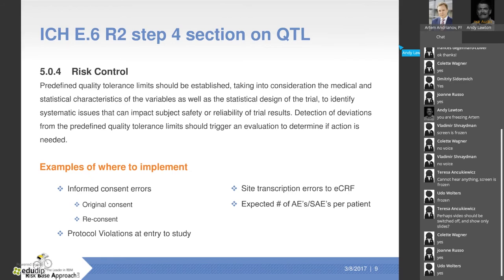Detection of deviations should trigger an evaluation to determine if action is needed on systematic issues. Unlike in manufacturing where a batch gets rejected if a tolerance is exceeded, here regulators don't want to make it impossible to use trial results — they just want them explained. Regulatory authorities like the FDA and PMDA in Japan have statistical monitoring tools with detection methods for systematic errors; they just press a button and know where issues are.